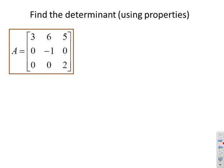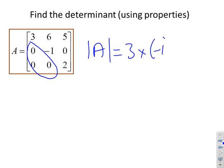First example: find the determinant using the properties. What you can see here straight away is that this determinant is lower triangular. So by inspection I just need the product of the diagonal elements: a equals three times minus one times two.